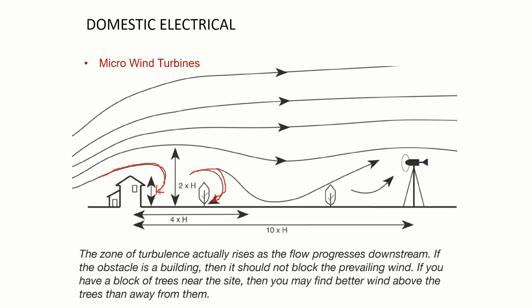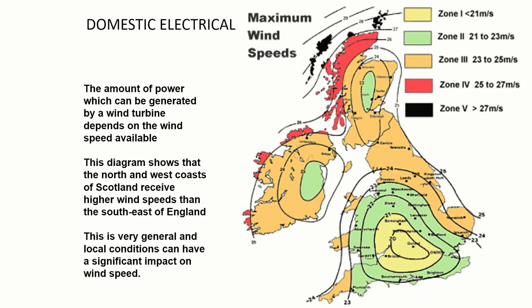If you have a block of trees near the site, then you may find better wind above the trees than away from them. We have mapping available for wind speed in the same way that we had for photovoltaic. You can see that where we reach the top of Scotland and the west coast, we get quite significant wind speeds. If we go down to the southeast of England, we get a lot less. It's important to understand whereabouts you are before you start to specify a micro wind turbine. Local conditions can have a significant impact.